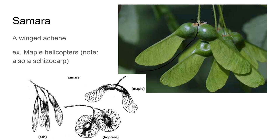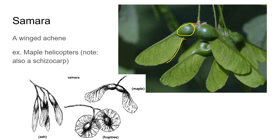A samara is an achene that has wings, specialized for aerial dispersal — it's going to be dispersed on the wind. This particular samara we're looking at is two samaras stuck together; fruits that break apart are called schizocarps. So a samara is an achene with a wing. Maple helicopters are one example of a samara, which is also a schizocarp because it's going to break into pieces — think schizophrenia, where the mind breaks into multiple personalities. Other examples are ashes and hop trees.